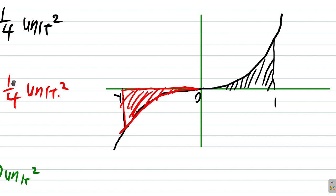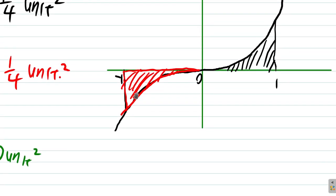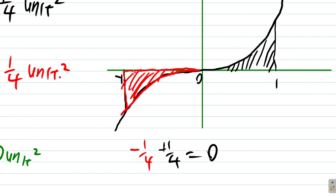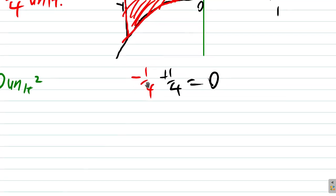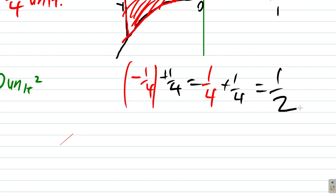Even though the integration gives 0, the real area when going from negative 1 to 1 is actually one half. Since we're finding an area, we consider the modulus of each value. So instead of 0, the area is the modulus of one quarter plus one quarter, which is one half unit squared — two times a quarter.